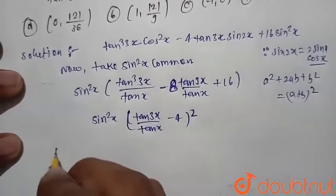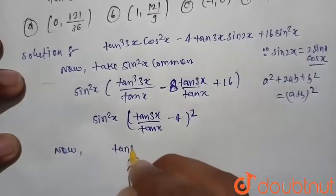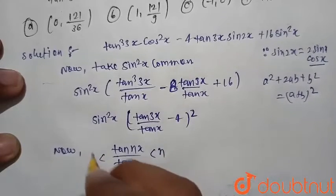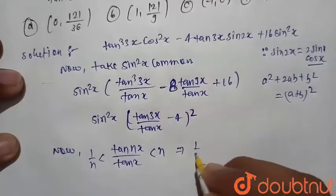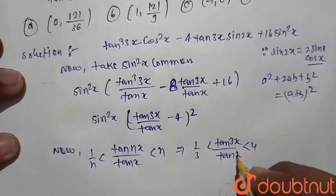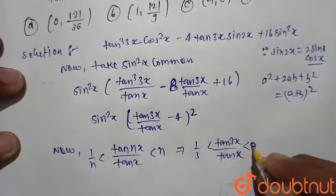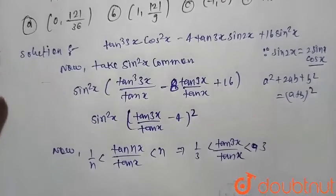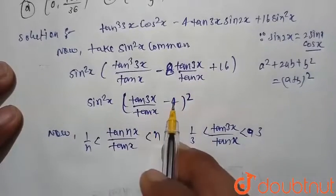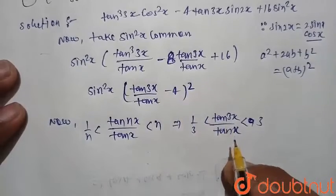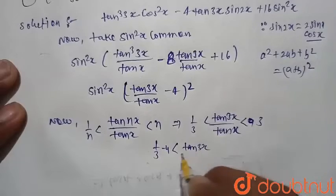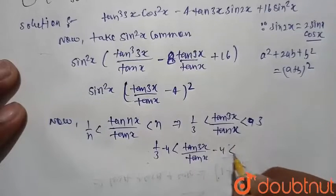We know that tan(3x) divided by tan(x) lies between 1/3 and 3. So tan(3x)/tan(x) ranges from 1/3 to 3. Subtracting 4, we get tan(3x)/tan(x) minus 4 lying between 1/3 minus 4 and 3 minus 4, that is between minus 11/3 and minus 1.